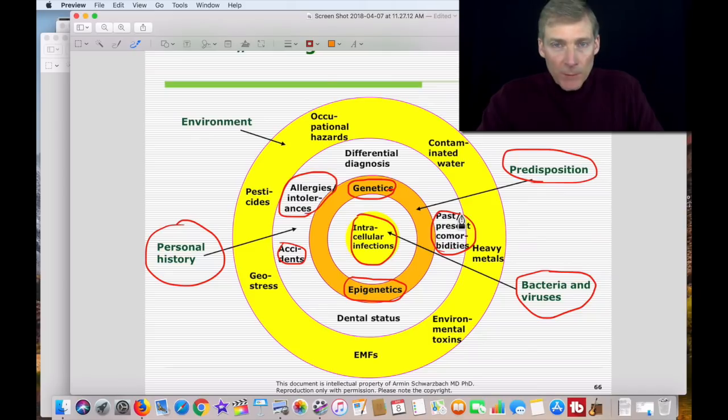Past and present comorbidities. For example, maybe you had mono when you were 20 and you still have that virus, although you don't feel it. So that's what that means.